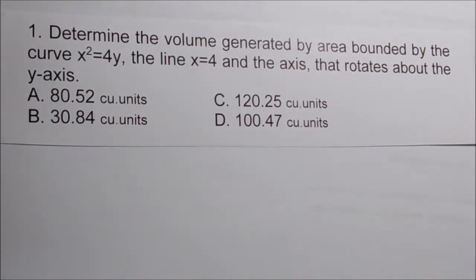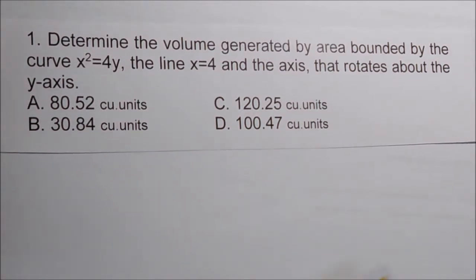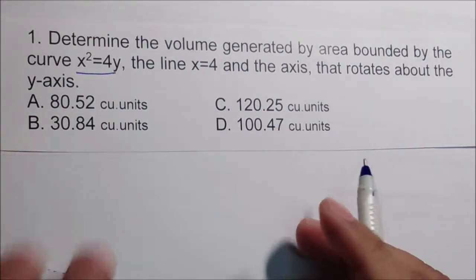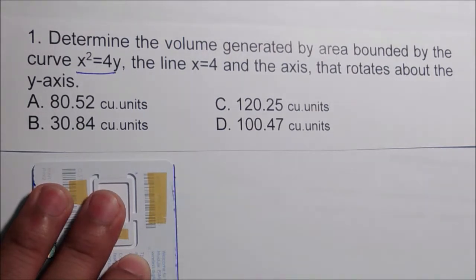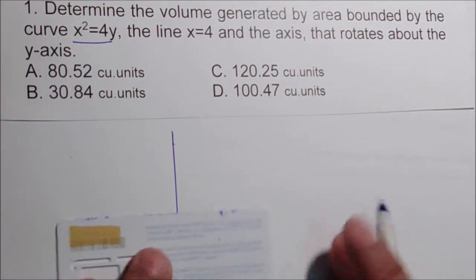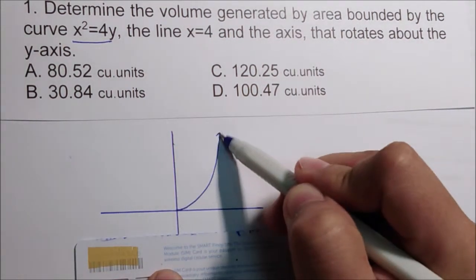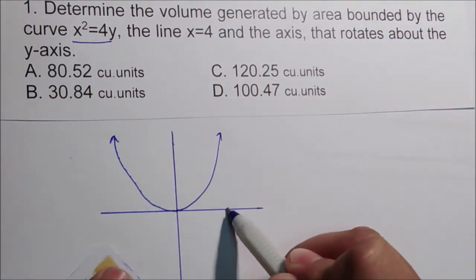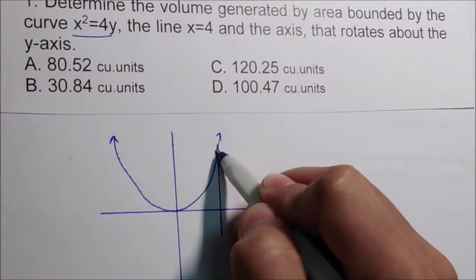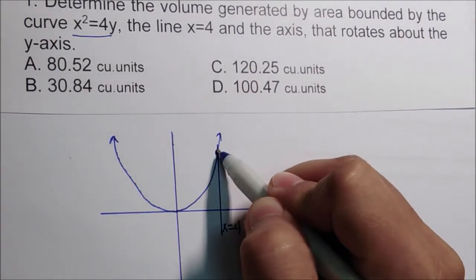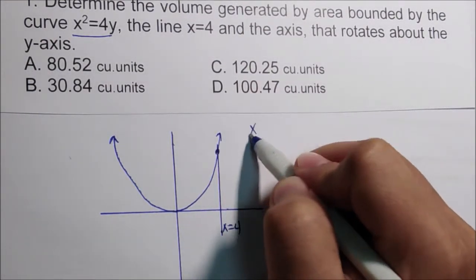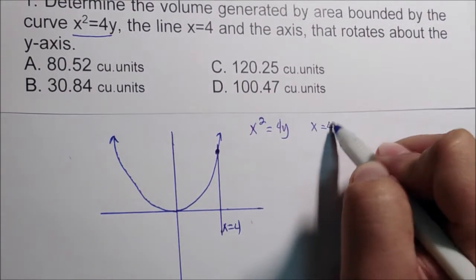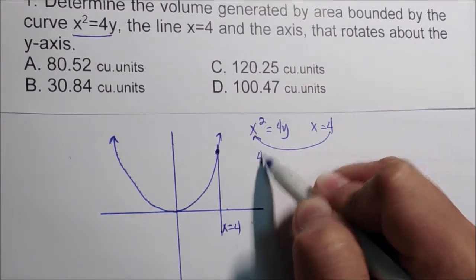Determine the volume generated by the area bounded by the curve x² = 4y, the line x = 4, and the x-axis, that rotates about the y-axis. This curve is a parabola that opens upward with center at (0, 0). The line x = 4 is drawn, and at the point of intersection we substitute x = 4 into the first equation: 4² = 4y.